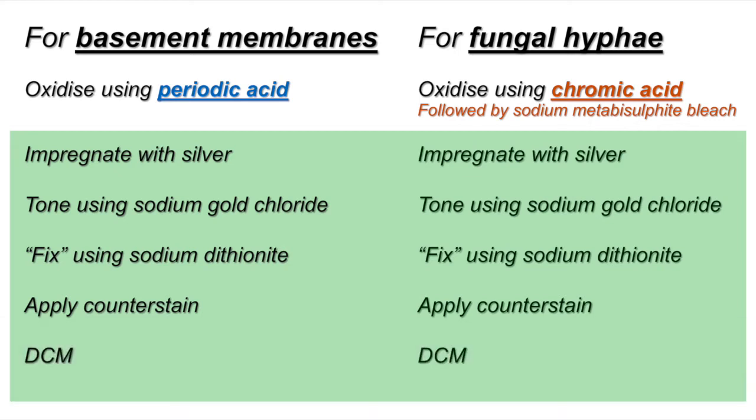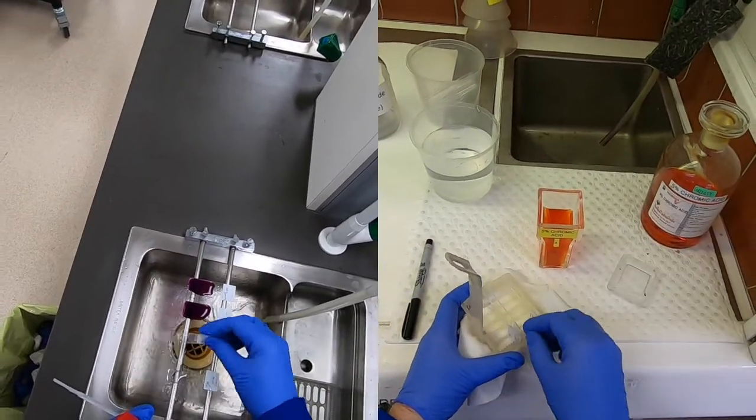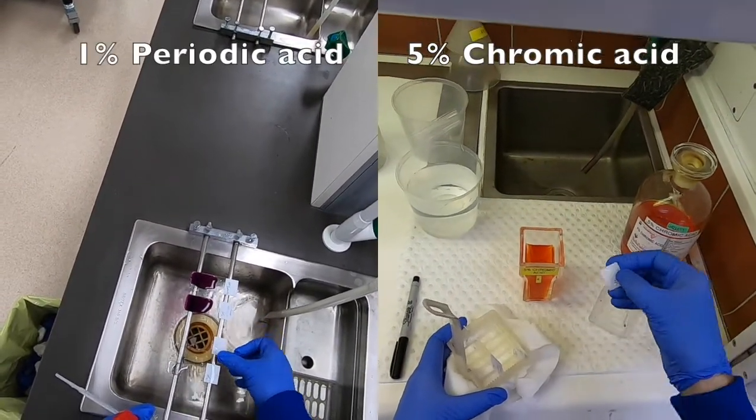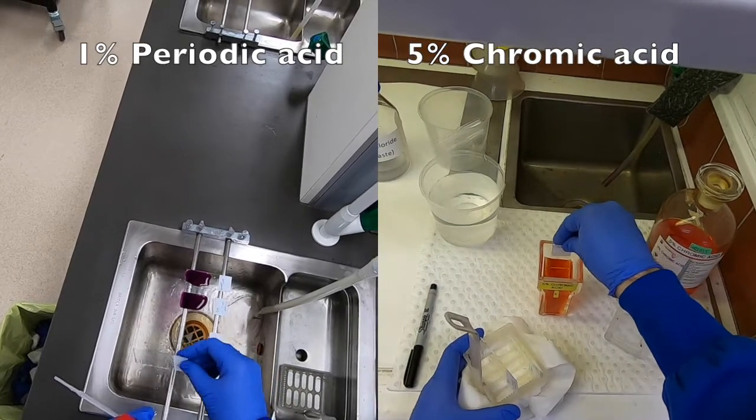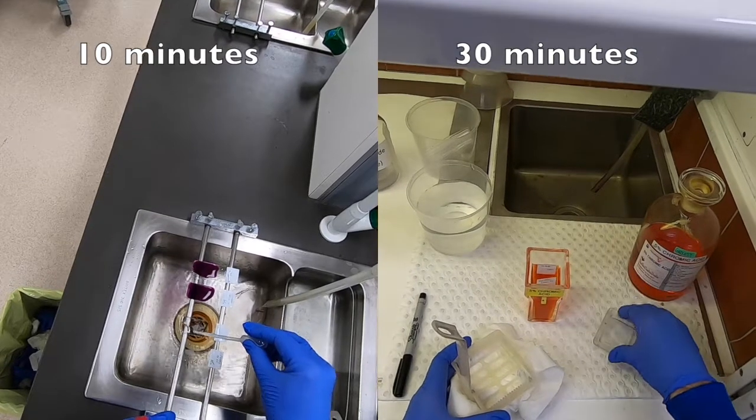So given the similarities between these two protocols we can actually compare them side by side which further helps to emphasize the differences and similarities. To begin we treat with either periodic acid for 10 minutes as you can see here on the left, or we treat for 30 minutes with the chromic acid.